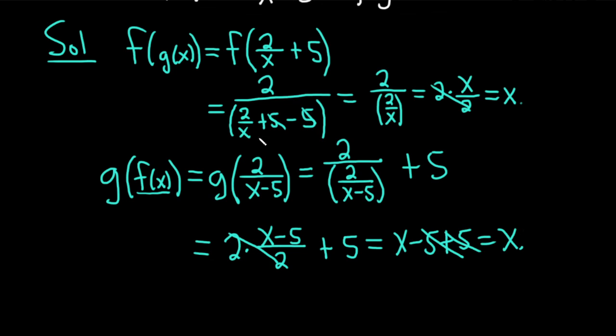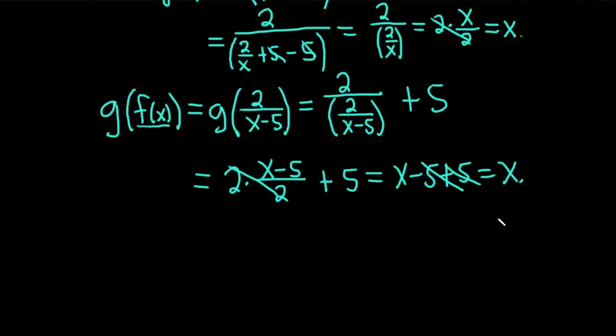So we got x for both of our answers. F of g of x is equal to x. G of f of x is equal to x. Therefore, the answer is yes. The functions are inverses. So if you do a problem like this and you don't get x for both answers, then the answer is no. I hope this video has been helpful to someone. Good luck.